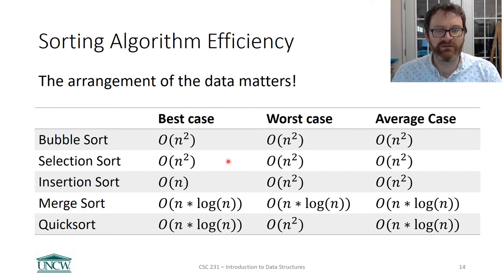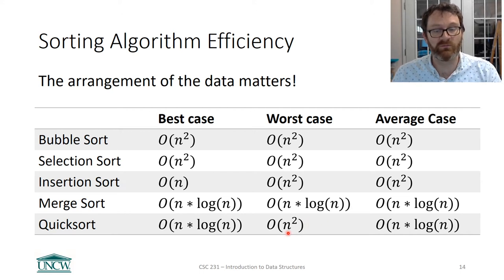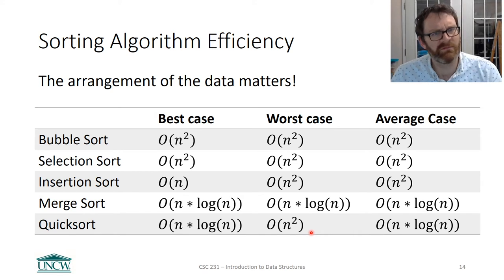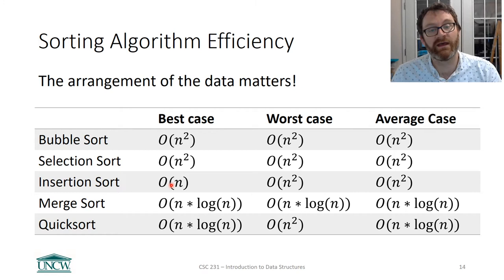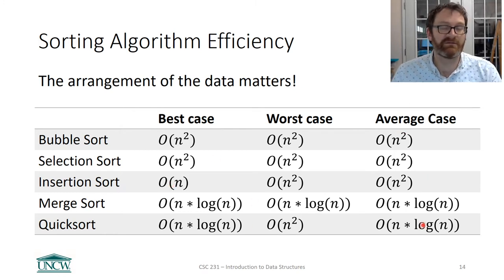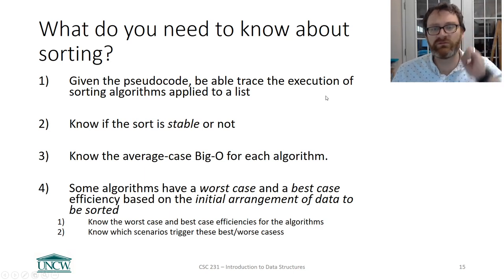There are a few notable worst cases. The big one is that quicksort is O(n²) if the data is already ordered. But if the data is already ordered, you as the developer should probably know that — so why are you sorting it? There's also a best case for insertion sort: if the data is already sorted, it's only O(n).